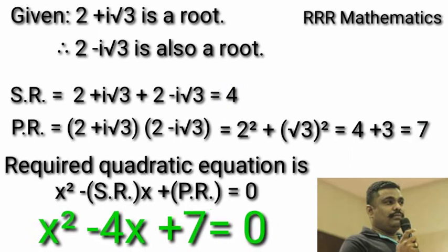I will repeat. 2 plus i root 3 is a given root. Therefore, the conjugate 2 minus i root 3 is also a root. In this case, sum of the root gives 4, product of the root gives 7. So therefore, the required equation when you substitute in the standard quadratic equation is x square minus 4x plus 7 equal to 0.